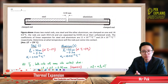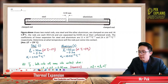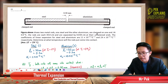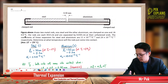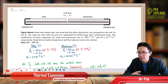Welcome to the first question in thermal expansion. The figure above shows two metal rods, one steel and the other aluminium, clamped on one end. At zero degrees Celsius, the rods are each 30 cm and separated by 0.03 cm at their unfastened end.